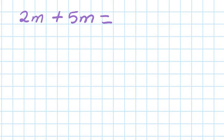So 2m plus 5m — just like 2 plus 5, because they are like terms. So 2 plus 5 is 7, so your answer is 7m.